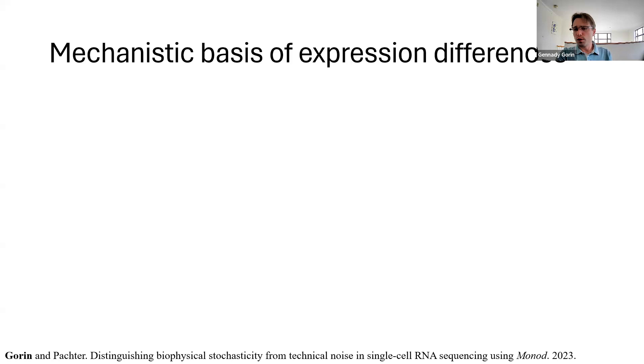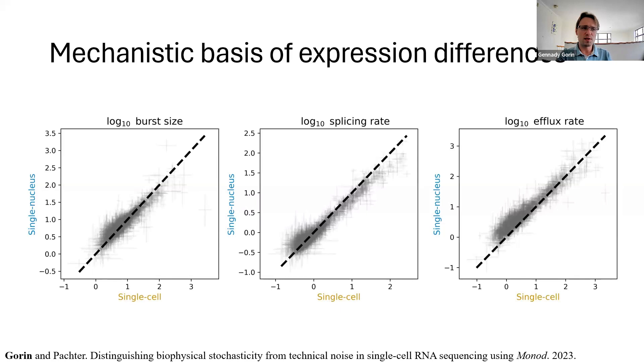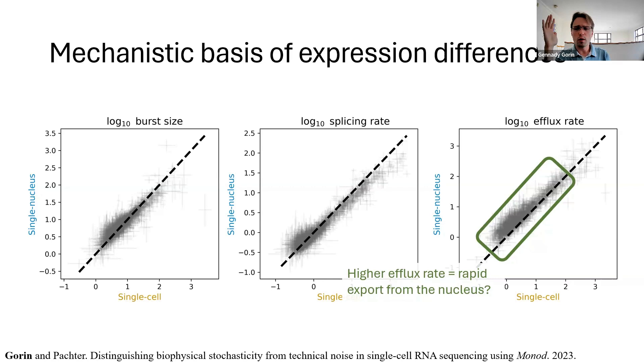So, for instance, we can look at replicates, compare the parameters we obtain, and ascribe the differences to specific biophysical effects. So here we're looking at matched data sets from single cell and single nucleus technology after accounting for technical variability. And it turns out the single nucleus data set has a much lower mature RNA lifetime, whereas other parameters look roughly the same. And maybe that's reasonable to explain by a rapid export from the nucleus. I could believe that.